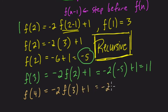Equals negative 2 times f of 3. We found out that was 11. And then plus 1. So that's negative 22 plus 1, which is negative 21. And then finally, finally, we get to f of 5.